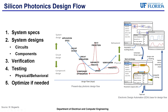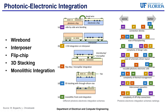Silicon photonics allows for the integration of many optical functions on a single chip. However, in a real system, the photonics need to be integrated with the electronics into a single circuit to improve the performance of either the photonics or the electronic system. Five approaches that have been explored are wire bonding, interposer, flip chip, 3D stacking, and monolithic front end integration.